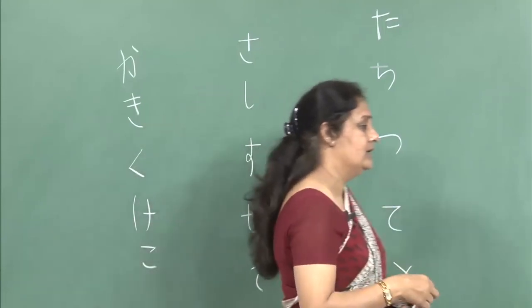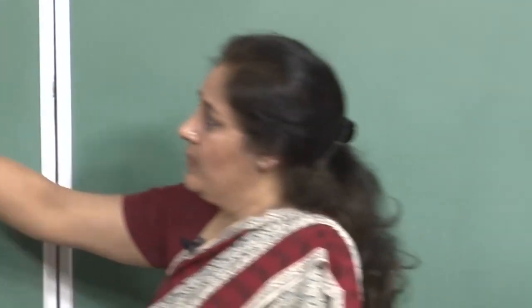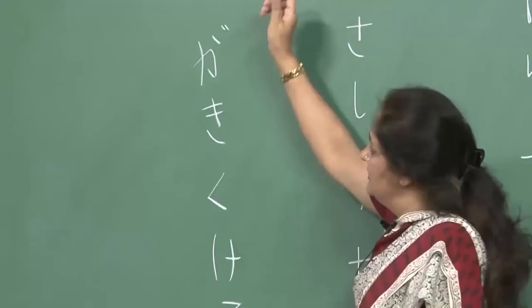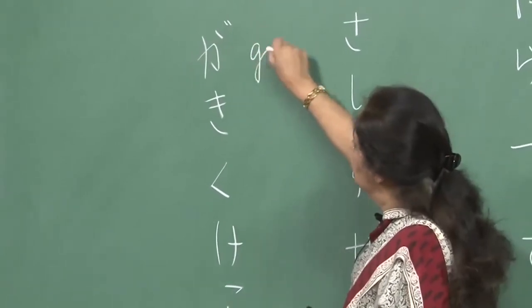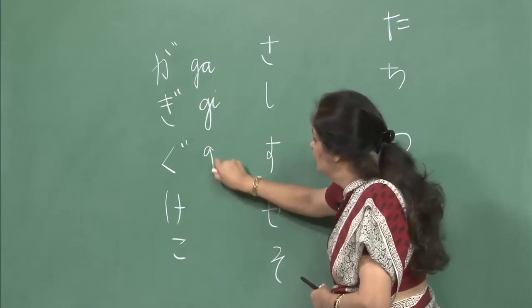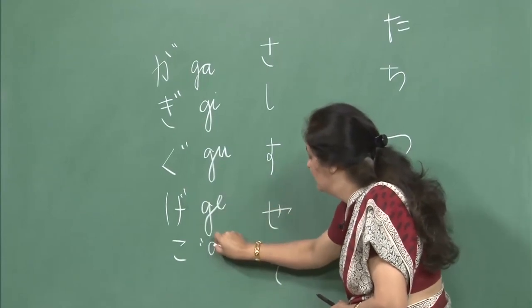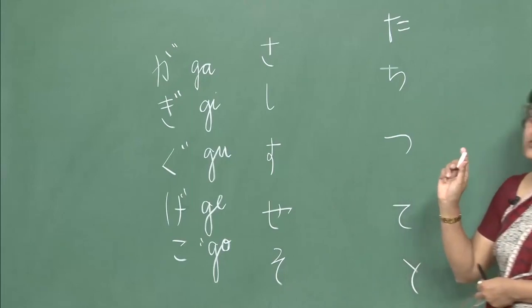Now, with the help of this first set, we will do another set today which is the ga set — a slightly nasal sound. Just by adding two small symbols, from ka you can make it into ga, gi, gu, ge and go. You could repeat after me please: ga, gi, gu, ge and go.